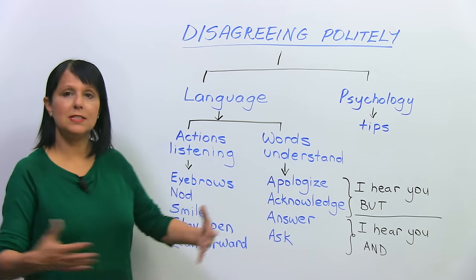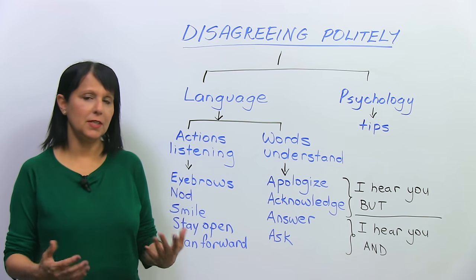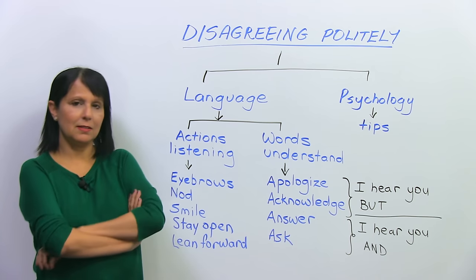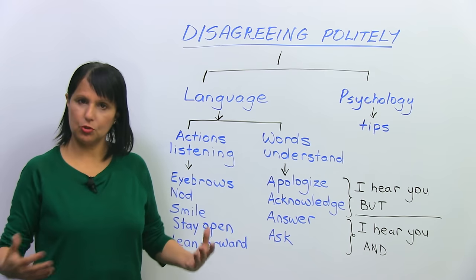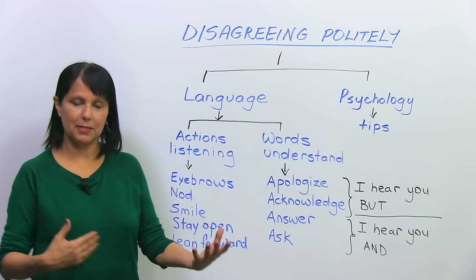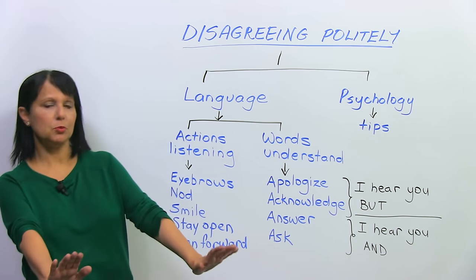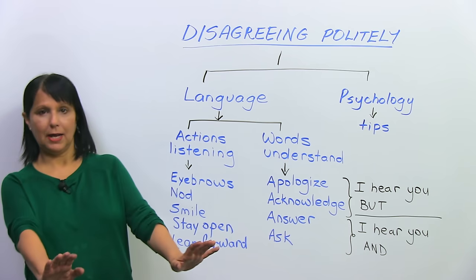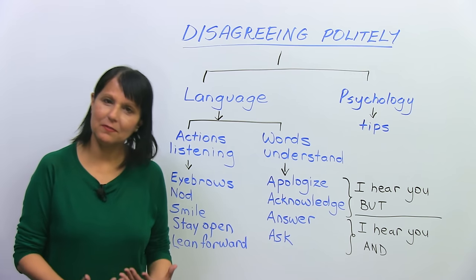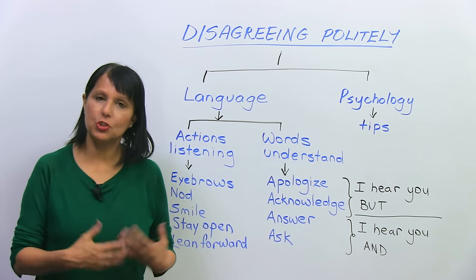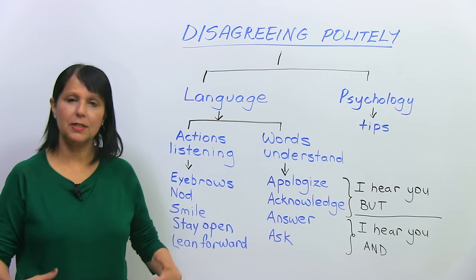The first thing is to stay open with your body. When someone's talking and we don't agree, sometimes people tend to sit or stand like this — closing themselves. So try to stay open because that message is also being communicated. And sometimes when we don't like what someone is saying, we tend to push back or move back. But resist that temptation and try to lean forward to show that you are listening. Keep your body open and lean forward.